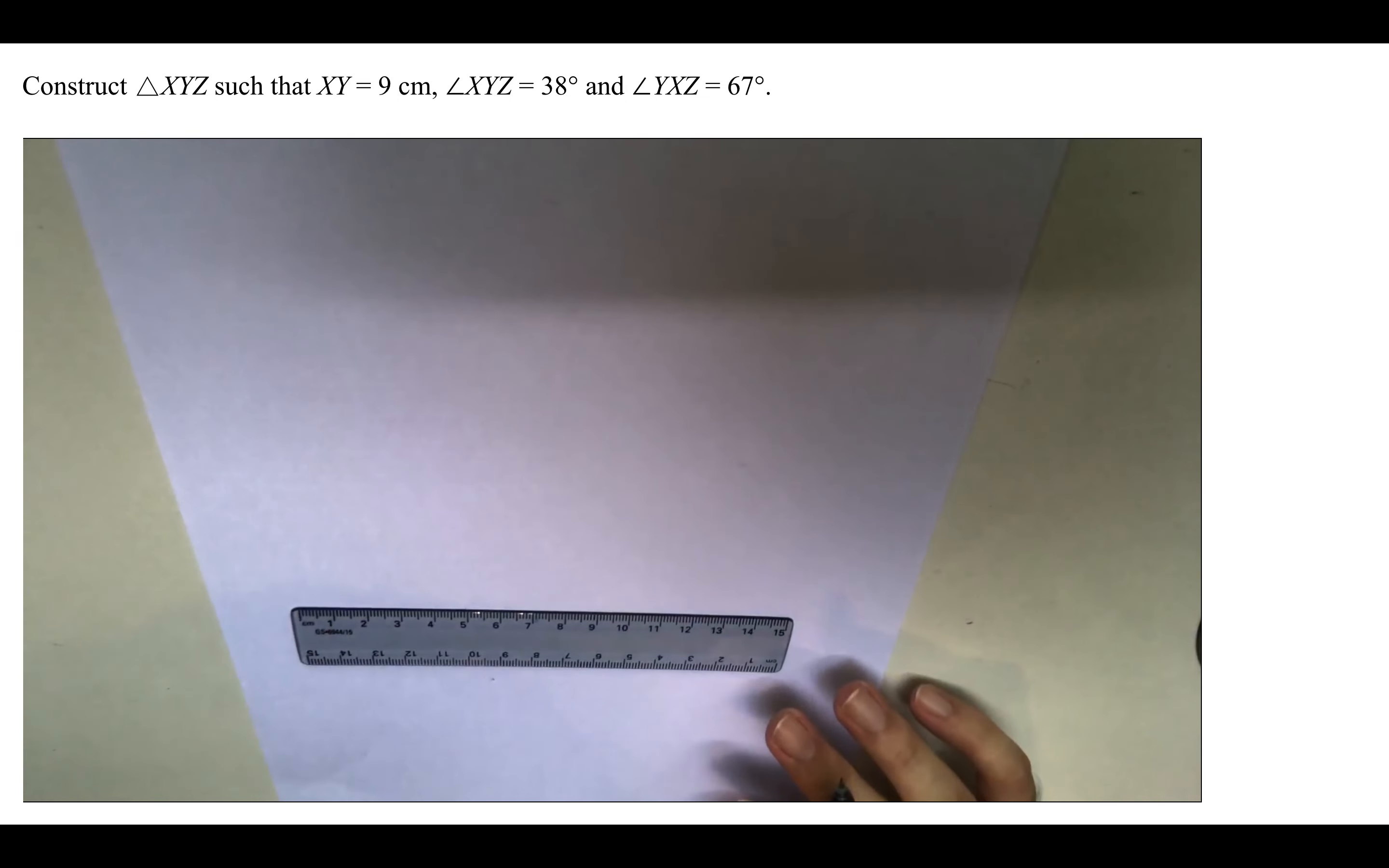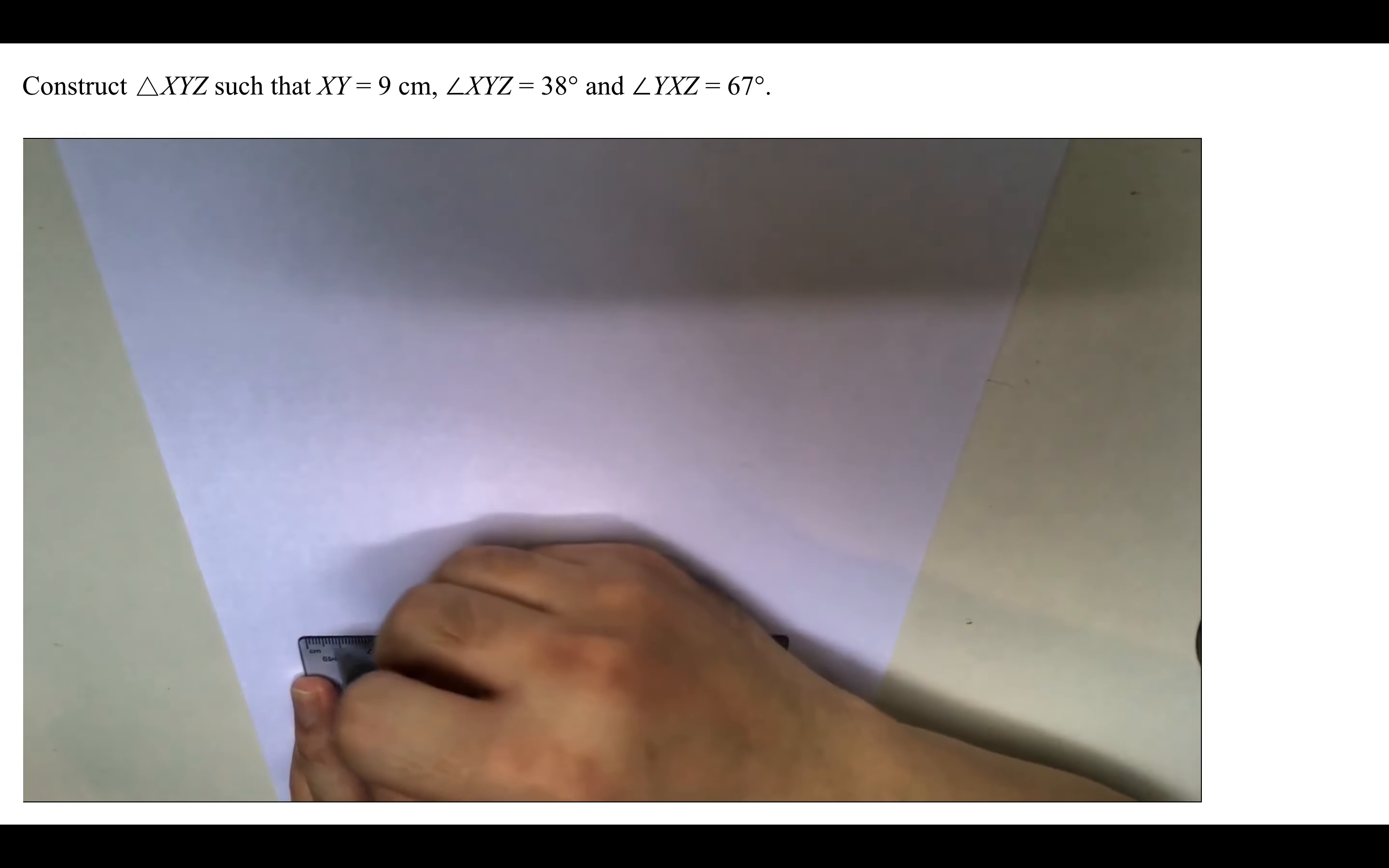What we are going to do right now is begin with a ruler, and we are going to draw the line XY. So the line XY is given as 9cm, all we need to do is draw 9cm like so.